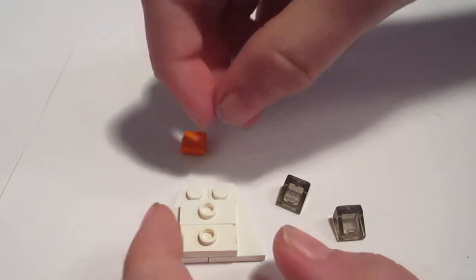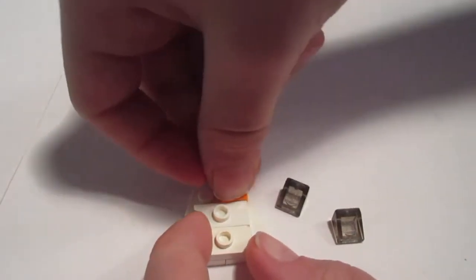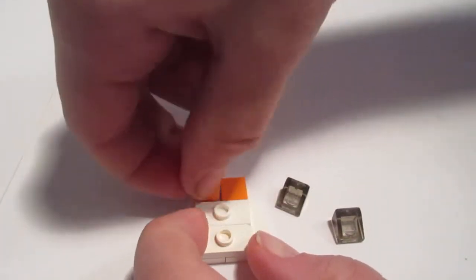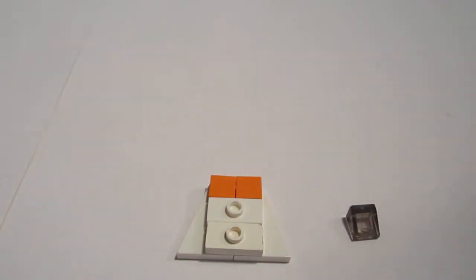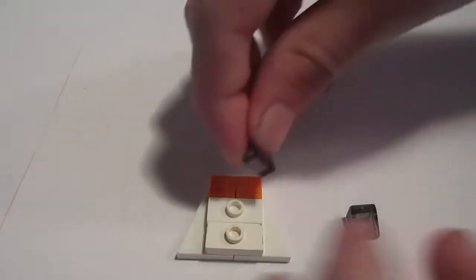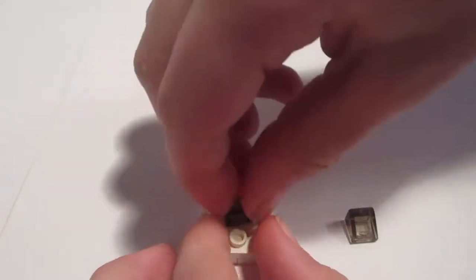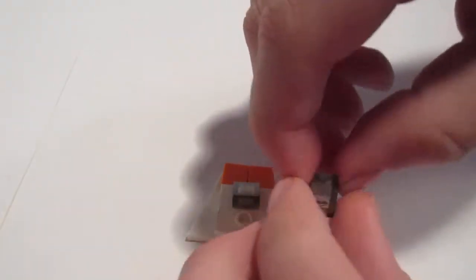Next you're going to take both of your one by one orange flat tiles and place them each up here. Then after that you're going to take your small cheese slope pieces and place them right here.